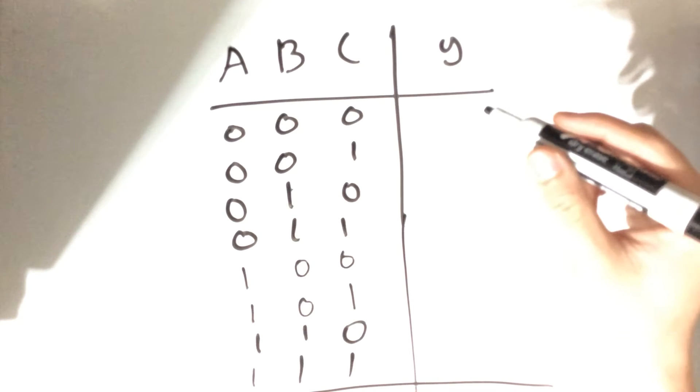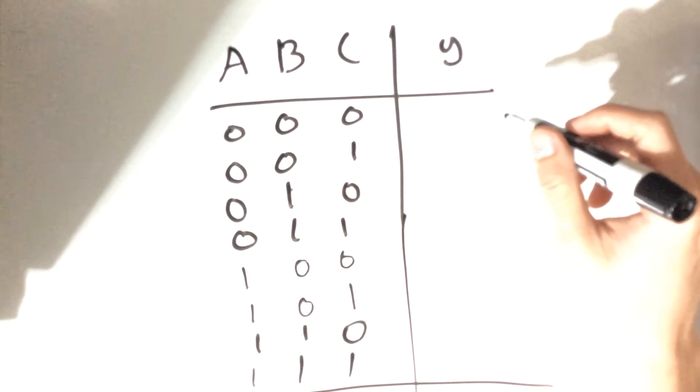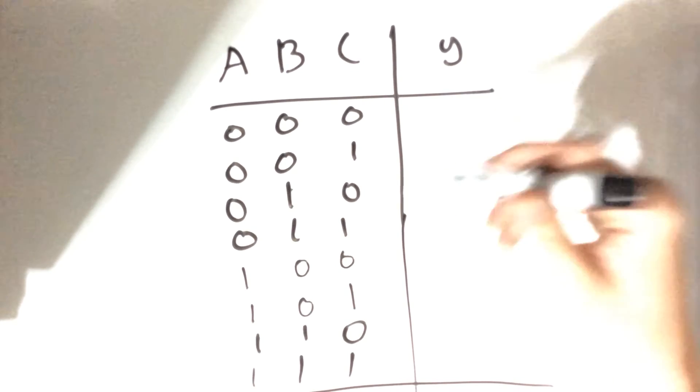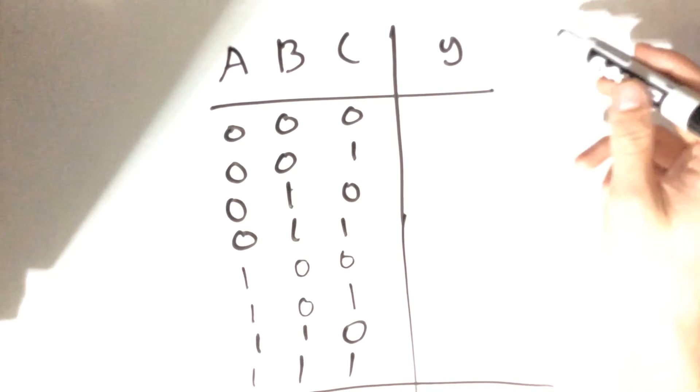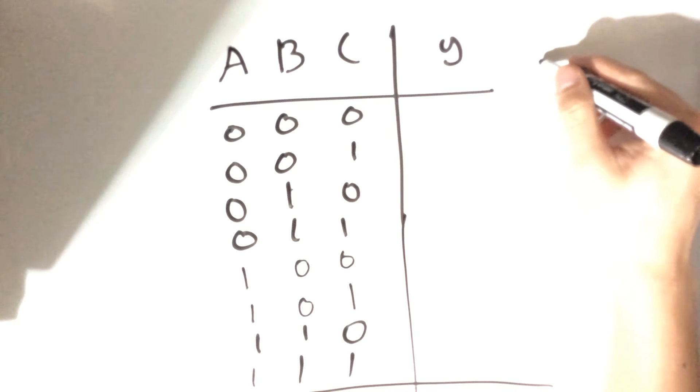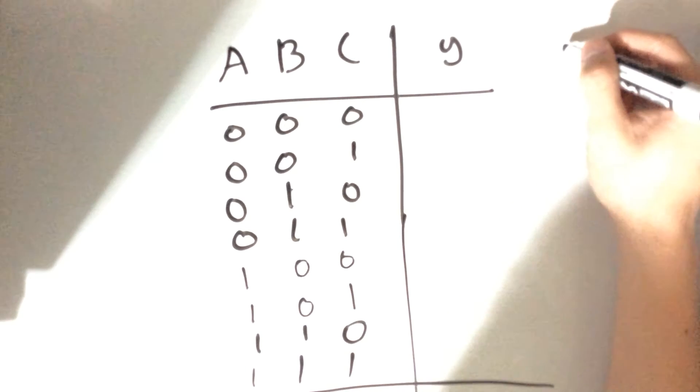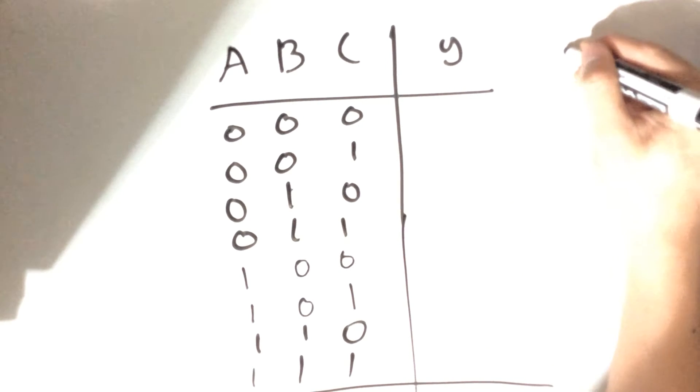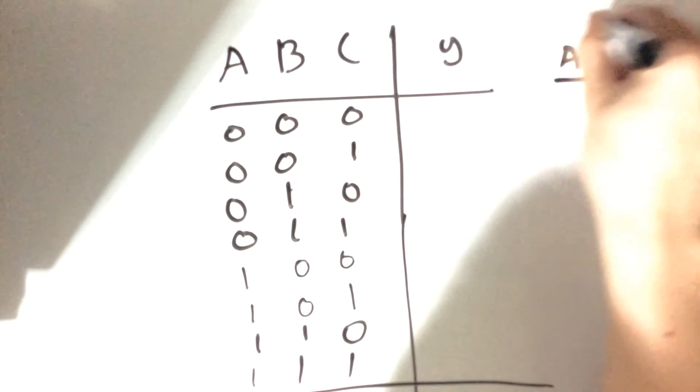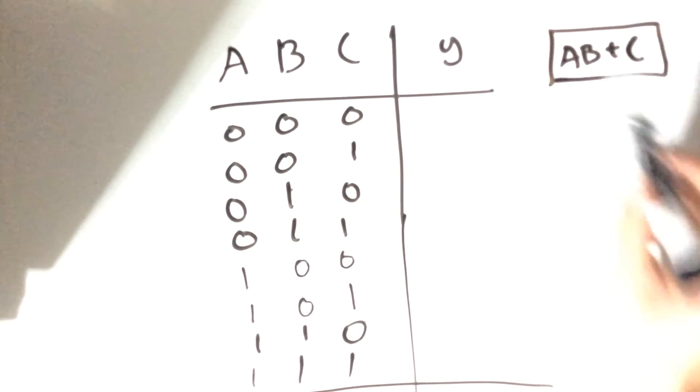If we go ahead and attempt to understand the truth table of what we drew earlier, we had our final value which was AB plus C. This was our final output.